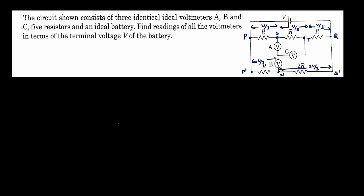Now, since we know the voltage drop, for easy understanding, let me just ground this point — so this would be at zero volt now. And this would be at plus V volts. Suppose if this is plus V, then we can say that point Q will be at zero volt, point P would be at plus V volt. And point Q dash would be at zero volt, point P dash would be at plus V volt. So using your voltage divider rule, we can now easily identify voltage drop at each and every point, which are considered as absolute potentials.